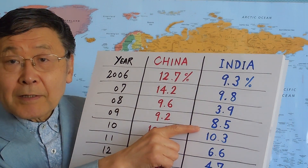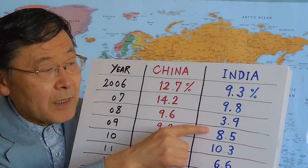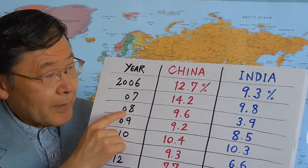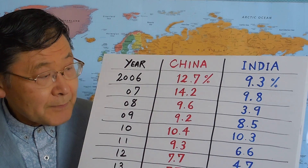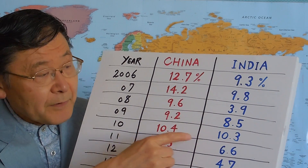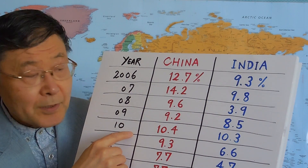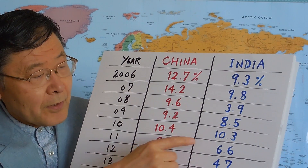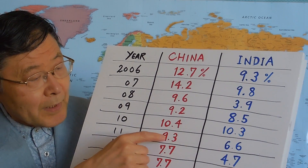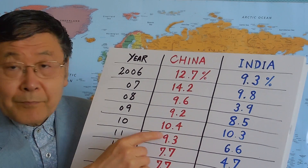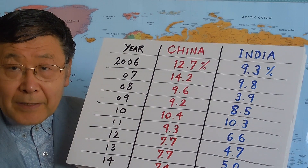Whereas in India there was no such massive program, and therefore India's growth rate declined sharply in 2008 compared to the previous year, as was the case in many other countries. But both countries recovered by 2010, with India and China both registering very high growth — more than 10%. And then both countries experienced a slowdown and decline in growth rates.